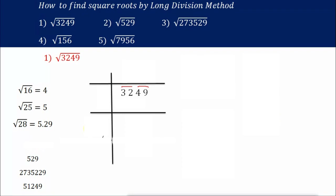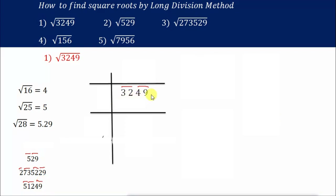Sometimes you won't have complete pairs. Always start pairing from the right-hand side — if you don't have a complete pair, leave it as it is. For example, here pairing from the right gives 29 and 52 as one pair, 73 as another pair, and 2 is left without a pair. For 3249, 49 is one pair and 32 is another pair.